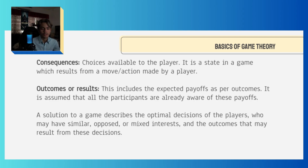Consequences refer to the choices available to the player — it is a state in a game which results from a move or action made by a player. Outcomes or results include the expected payoffs as per outcomes. It is assumed that all participants are already aware of these payoffs.